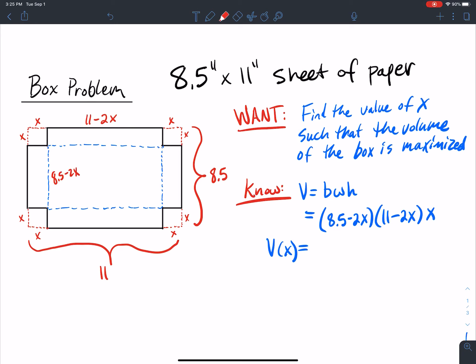Now I just need to multiply this out. Distribute these first two here, you can use FOIL or double distribute, and then once you distribute that, add a power of x to each term, and you're going to get 4x³ - 39x² + 93.5x.